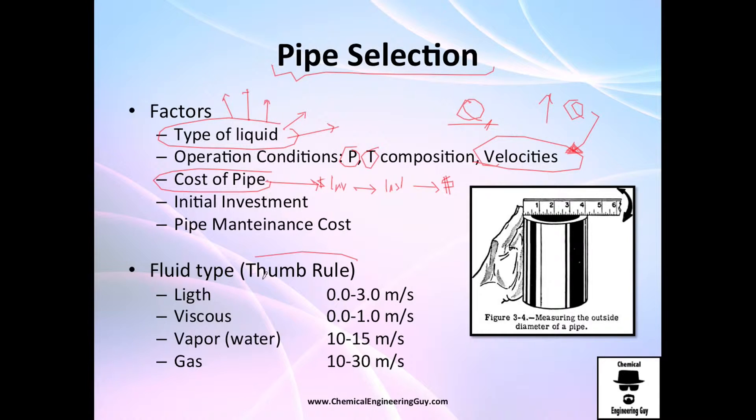This is a very thumb rule, a basic rule depending on the fluid type. Here goes the operation or velocity operation. If you want to create a light liquid such as water, typical applications are between 0 and 3 meters per second - actually I would say 1 to 2, 3 is a little bit high but it's okay. For viscous materials such as oil or honey or kerosene, you will try to operate at very low velocity.